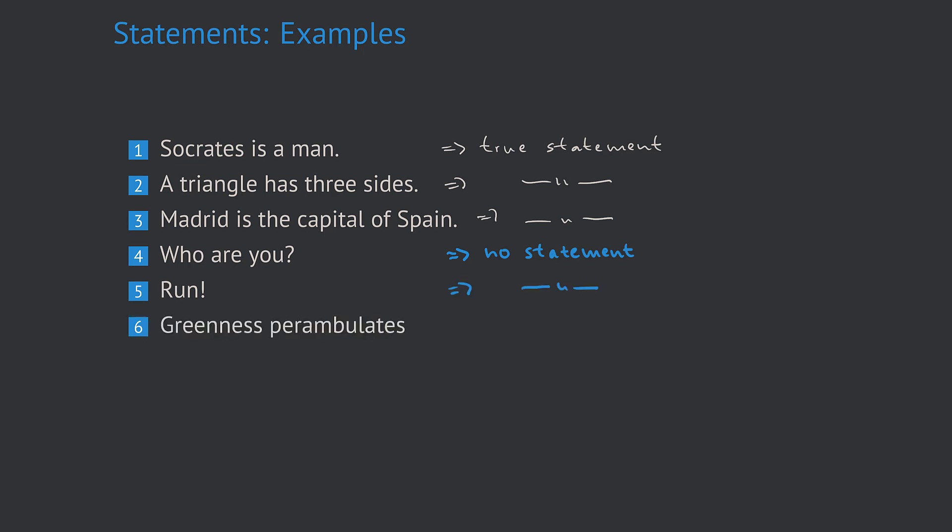Now that is a very lyrical one: 'Greenness perambulates.' That sentence can be considered as a lyrical description of some landscape or something or some mood, but it's no statement where we can decide if it's really true or false.